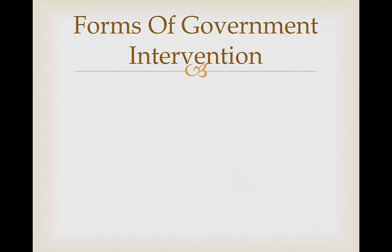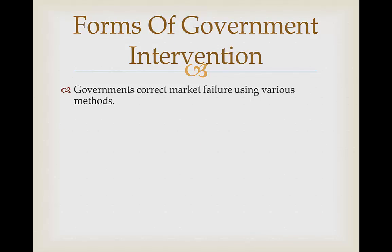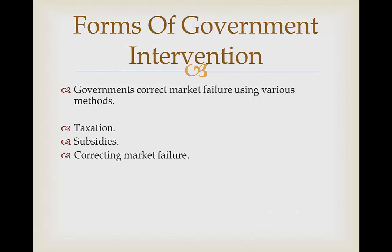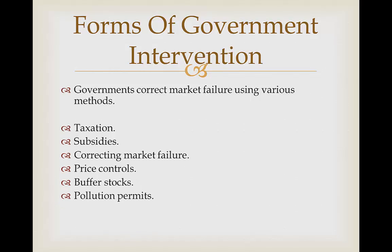What are the different forms of government intervention? Governments have to correct market failure using various methods. These are taxation, subsidies, correcting market failure, price controls, buffer stocks, pollution permits and perhaps regulation. We're going to look at all of these in this course in the next few videos.